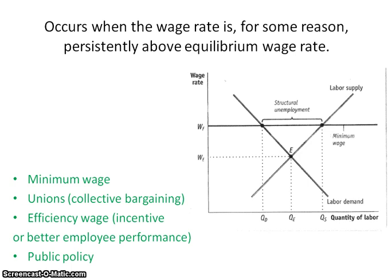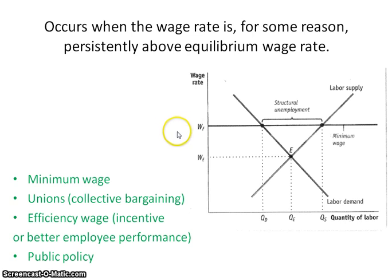An efficiency wage is a wage set by an employer where you're actually getting paid a little higher than what society deems that job to be worth. It's an incentive — people will work harder and stay longer at that job — so you'll have more people willing to do that job than positions available. The last cause is public policy. Unemployment compensation is one example: if you lose your job, the government will give you a certain percentage of your wages while you show you're looking for a job. That typically lasted about six months, but recently it's extended to a year and a half or two years as the government has tried to help people during harder times.